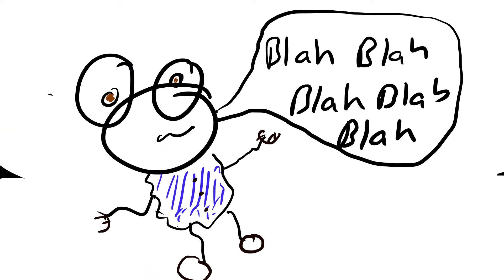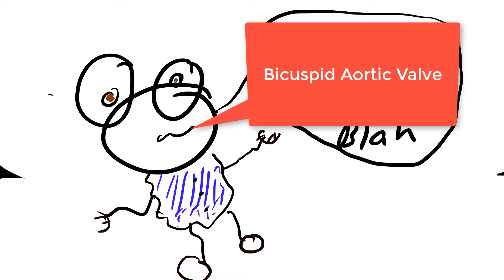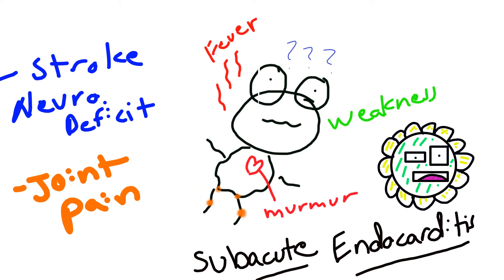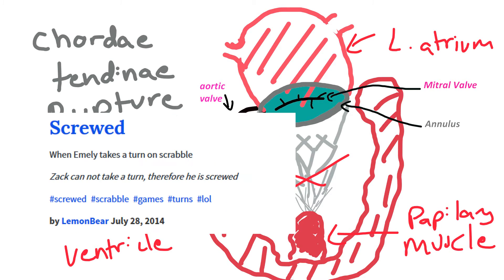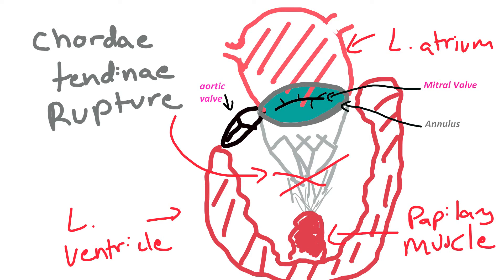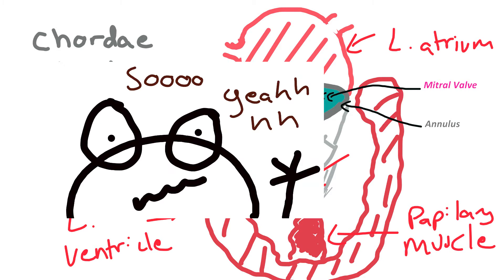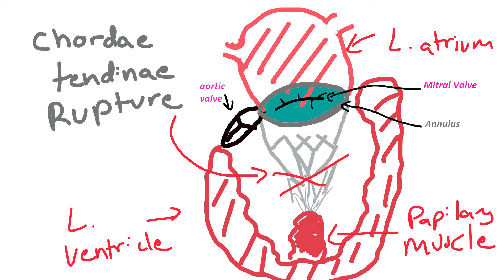Joint pain is a high-yield test topic alongside fever and murmur. I knew someone in their late 20s who presented with just a minor fever and hip pain — nothing else. After a full workup, they found vegetations in his heart from a bicuspid aortic valve, which broke off causing joint pain and stroke. One of the big complications is chordae tendineae rupture — if that happens, your valve loses its support from the papillary muscle and blood flows incorrectly.